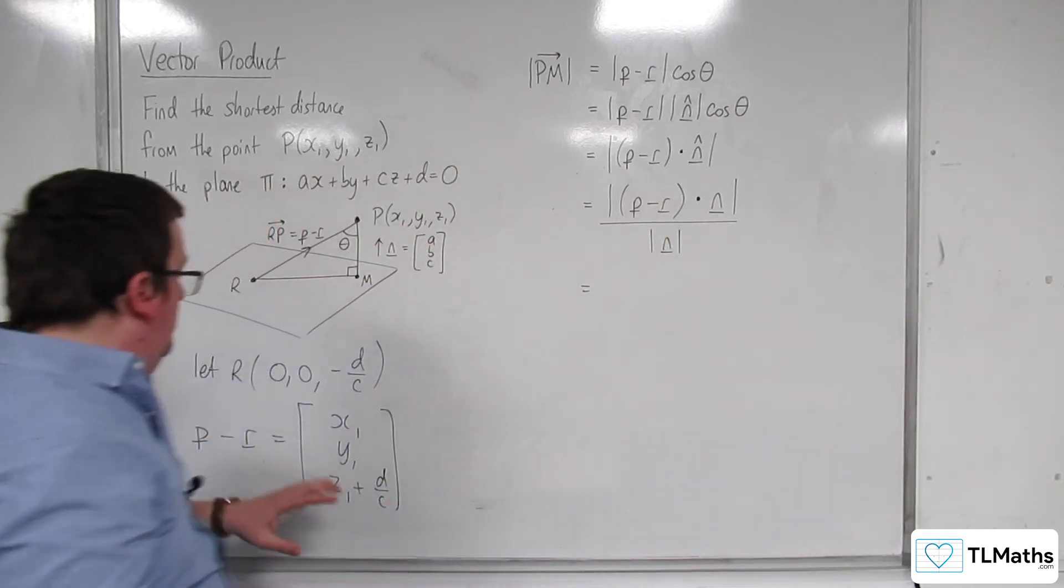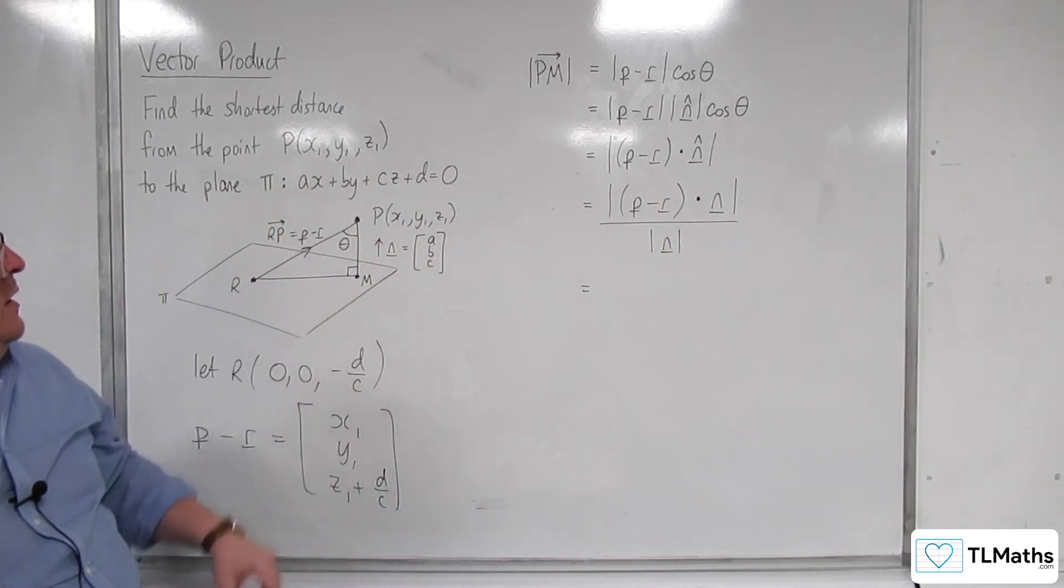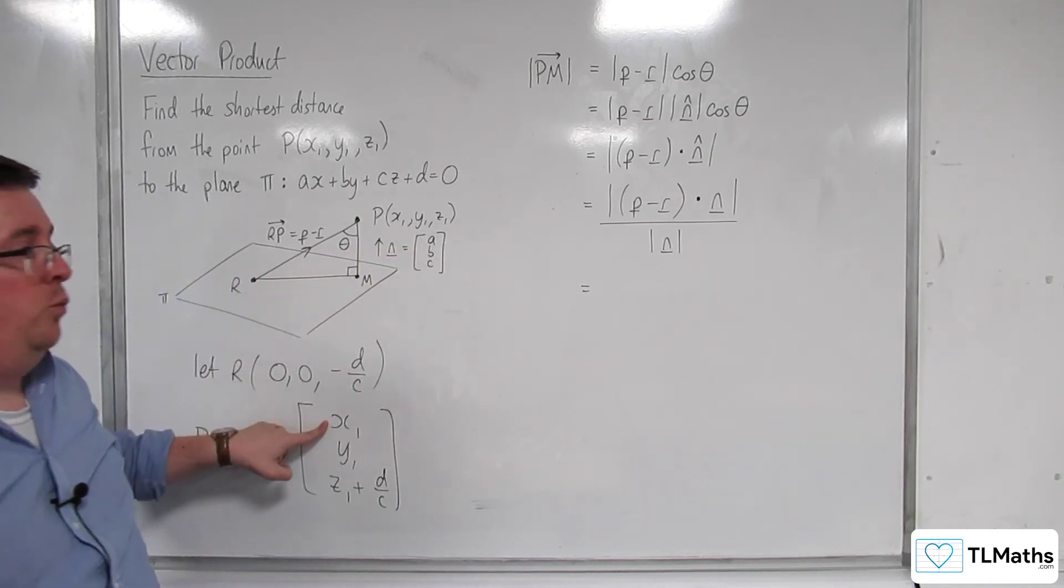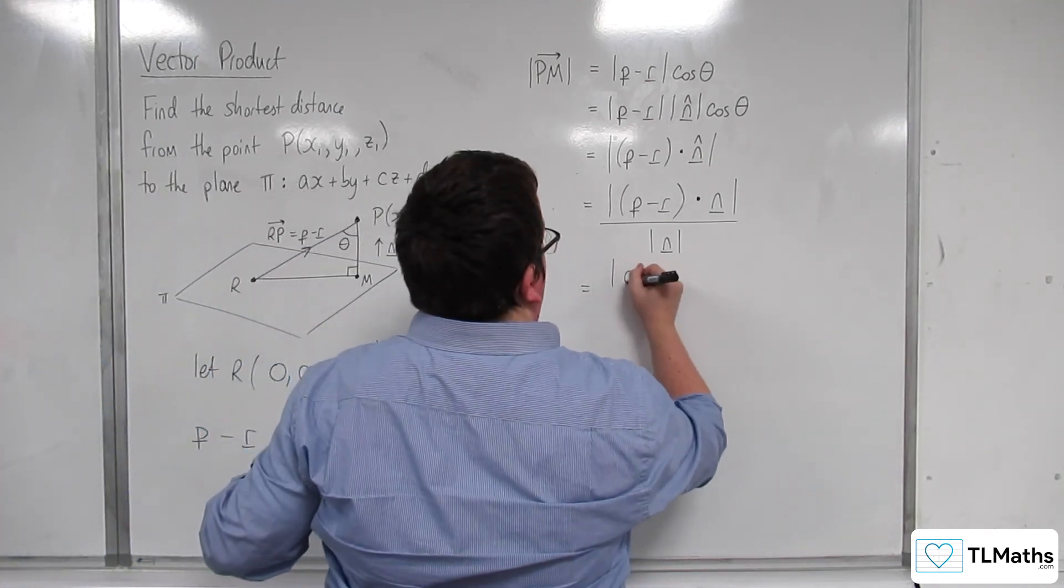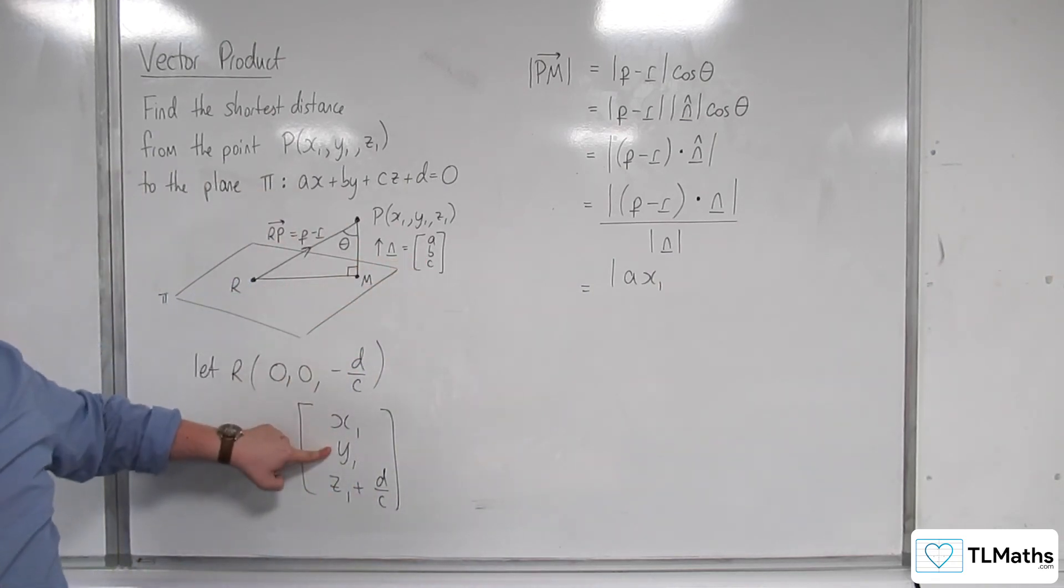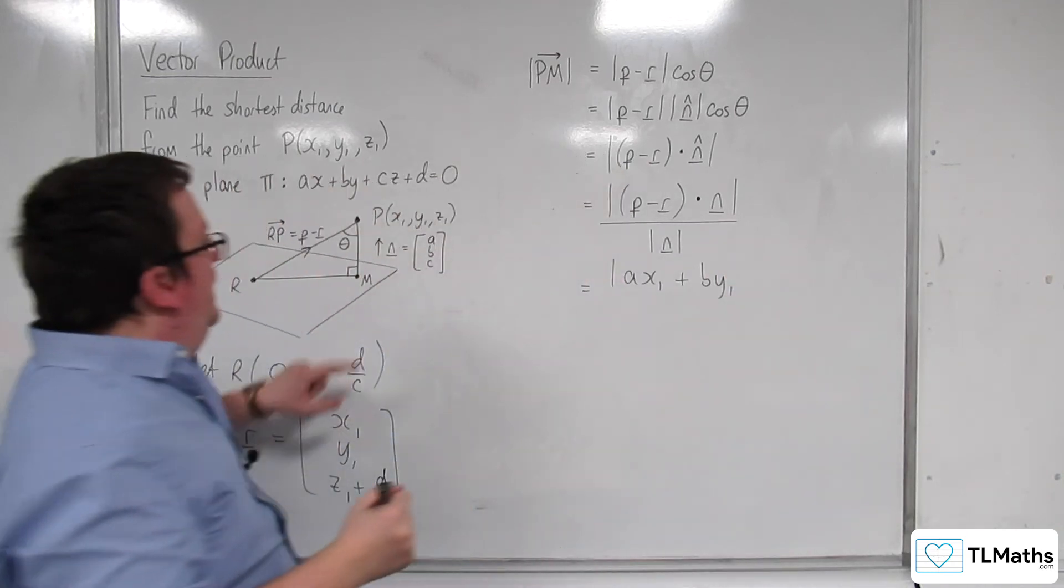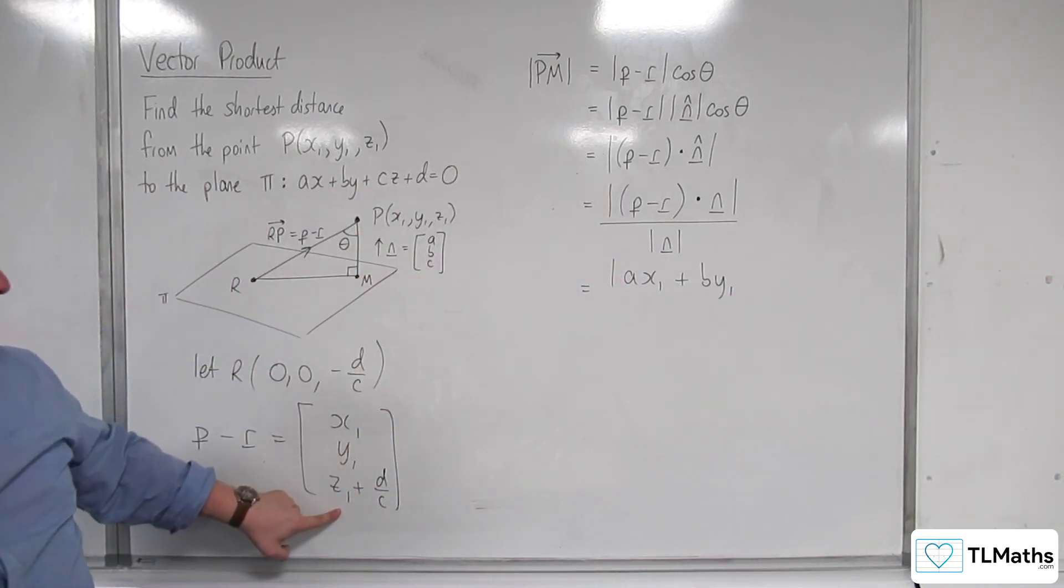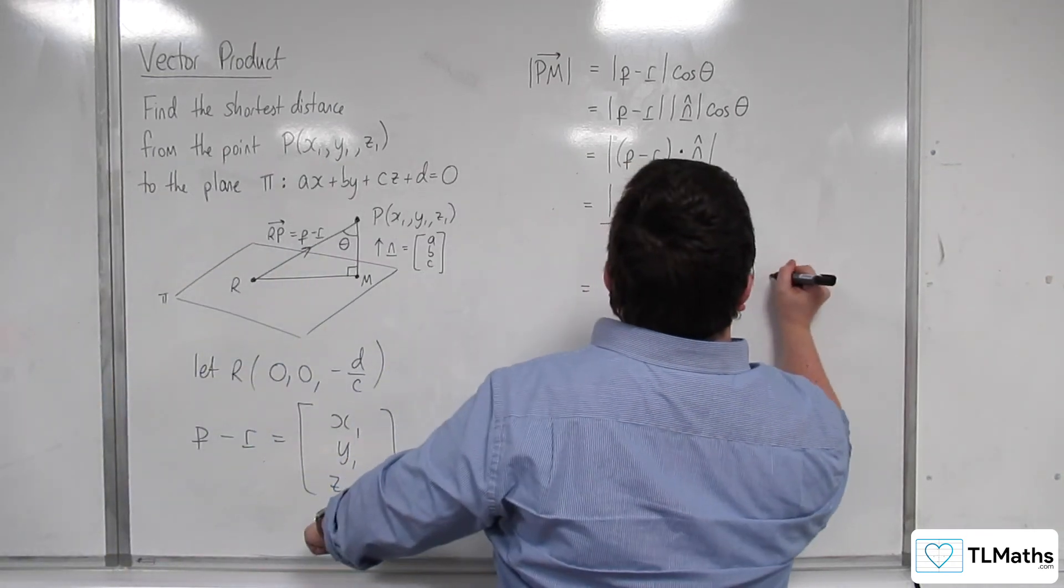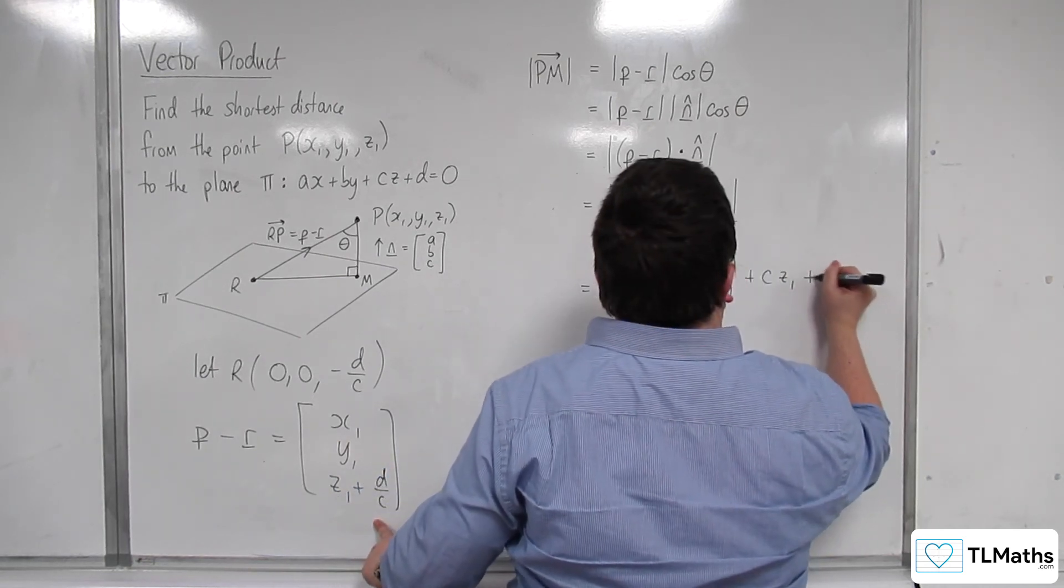So we've got P minus R, which is this, dotted with N. So I've got A times X1. I've got B times Y1. And I've got C times Z1. And C times D over C, which is plus D.